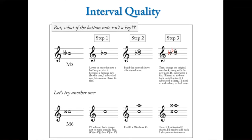What if the bottom note isn't a major key, like B double flat? The trick is to adjust the accidental to something you can work with. Forget about B double flat - think in terms of B flat instead, subtracting one flat. Build a major third above B flat: count up one, two, three to get D. In the key of B flat major there are two flats - B flat and E flat - and D fits naturally, so that's a major third above B flat.